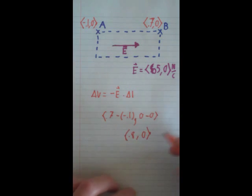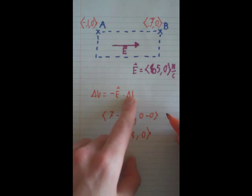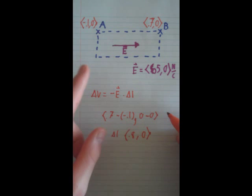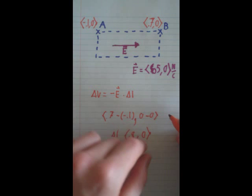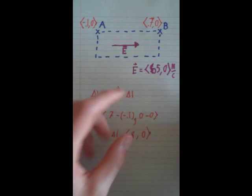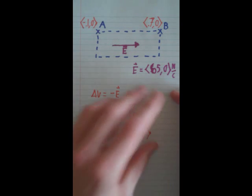Now that we have that, we need to find the dot product of these. The way to find the dot product is you multiply the X components and then you multiply the Y components and then add those two together. If you have a Z component, you also multiply the Z components and add those together.